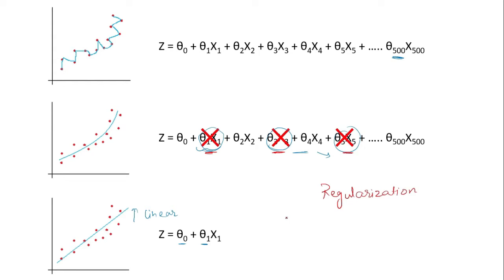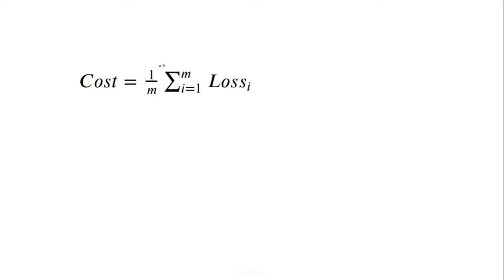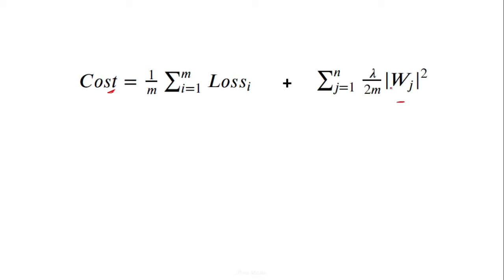Now we will look at the mechanism of L2 regularization and see how it can help us nullify the effect of certain parameters. The main objective of our model is to reduce the cost function value. So if we add a specific term to our cost function, it will create a nullifying effect on certain parameters.